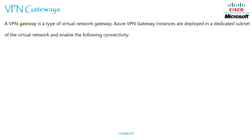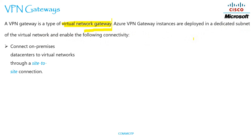A VPN gateway is a virtual network gateway — make a note of this, it is a virtual network gateway. Azure VPN gateway instances are deployed in a dedicated subnet of the virtual network and enable the following connectivity: the first one is connecting on-premises data centers to a virtual network through a site-to-site connection.